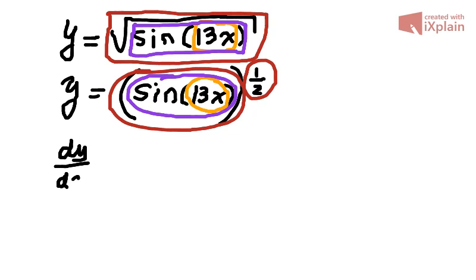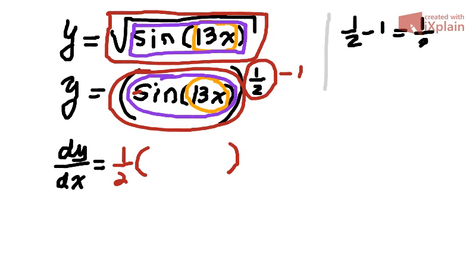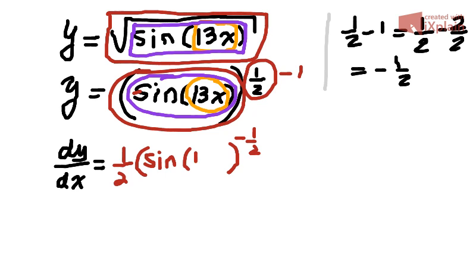So the derivative of y with respect to x will start with the derivative of the red power. A power of one half means the half moves to the front. So we have one half multiplied by the whole base, and we take 1 from the exponent. One half minus 1 equals negative one half — written as 1 minus 2 halves. To differentiate the outer red function, we move the half to the front and the whole expression inside must remain exactly the same: sine of 13x.